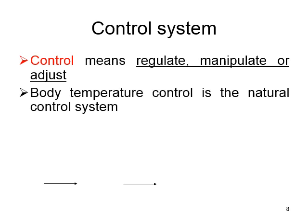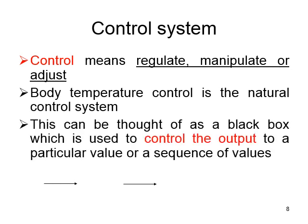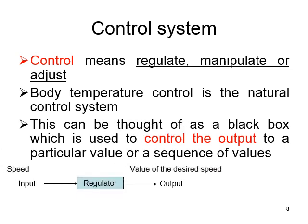What is the meaning of a control system? Control means to regulate, manipulate, or adjust. For example, the body temperature of a human being is a good example of a control system. It can be thought of as a black box used to control the output at a particular value or sequence of values. The function of the regulator in a control system is to control the speed.